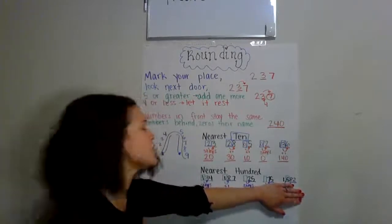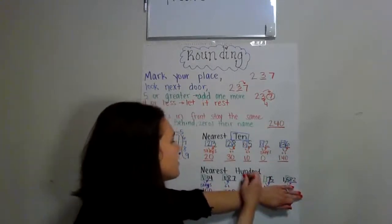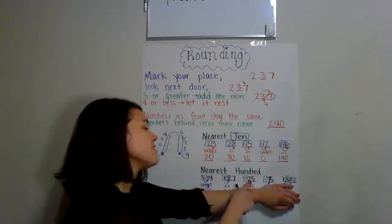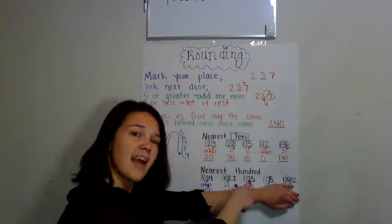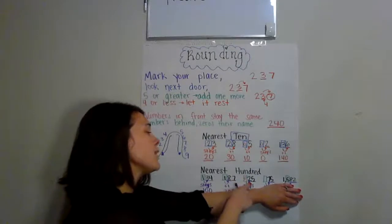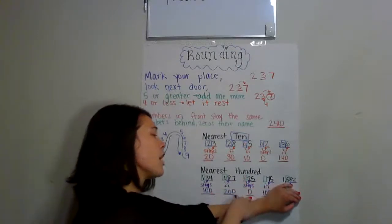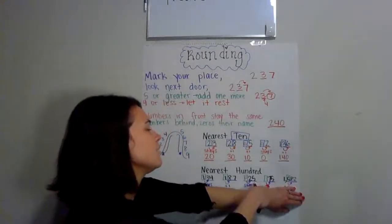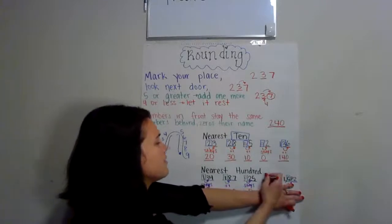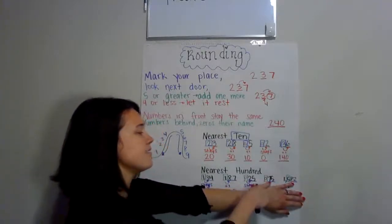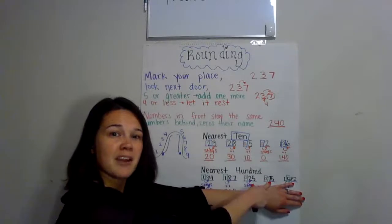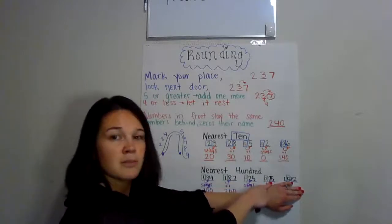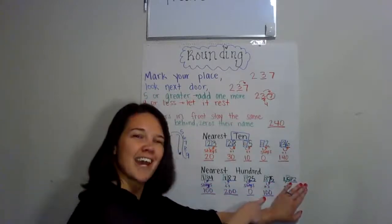25 — there's nothing in the hundreds place; there could be an imaginary zero if you want to fill it in. So we're going to find the place, look next door. Is that five or bigger? No, it's four or less. Let the zero rest. 25 is closer to zero than 100. 75 — there's nothing in the hundreds place, so I'm going to put a zero there. Find the place, look next door. Is that five or bigger? Yes. So we're going to add one more. 75 is closer to 100. Good job.